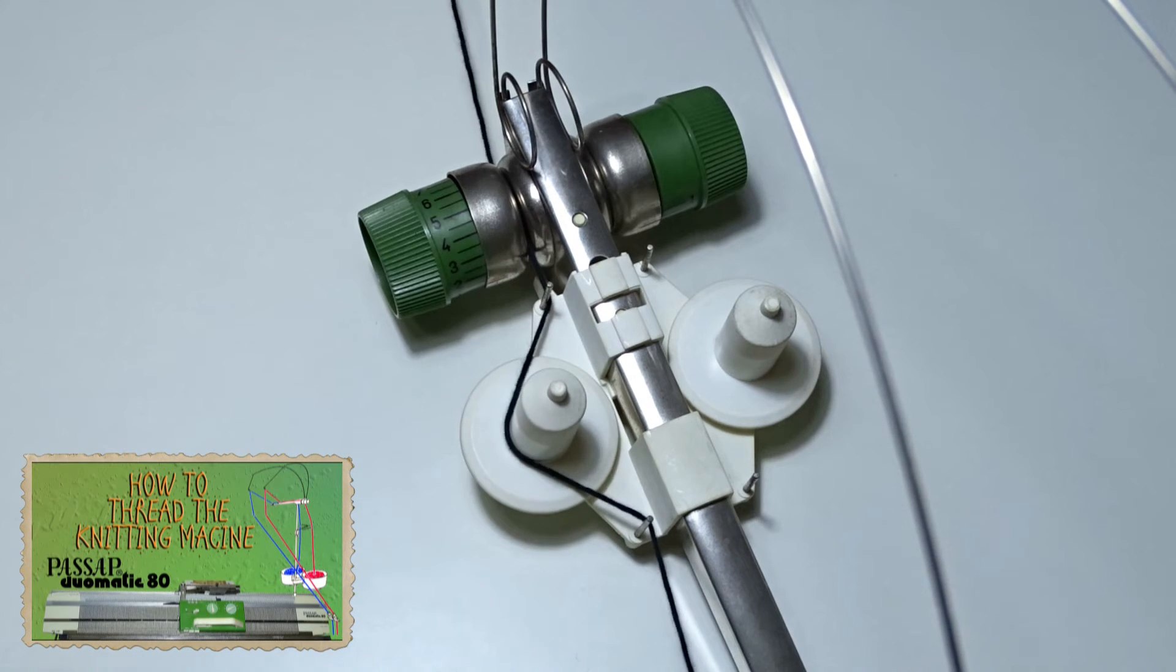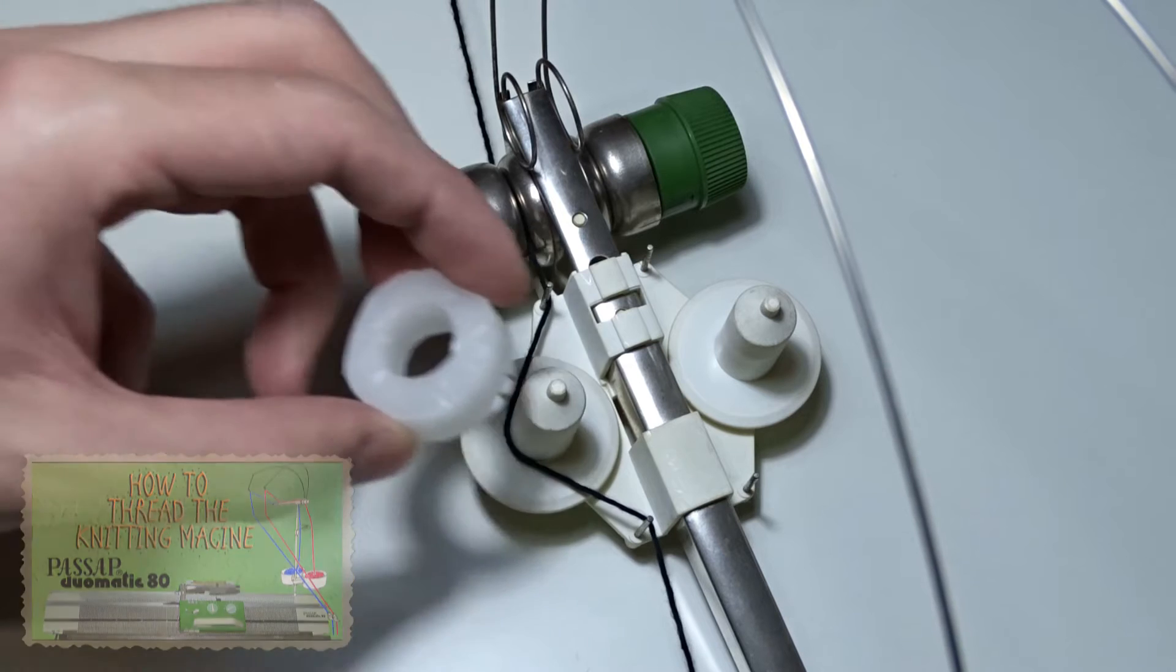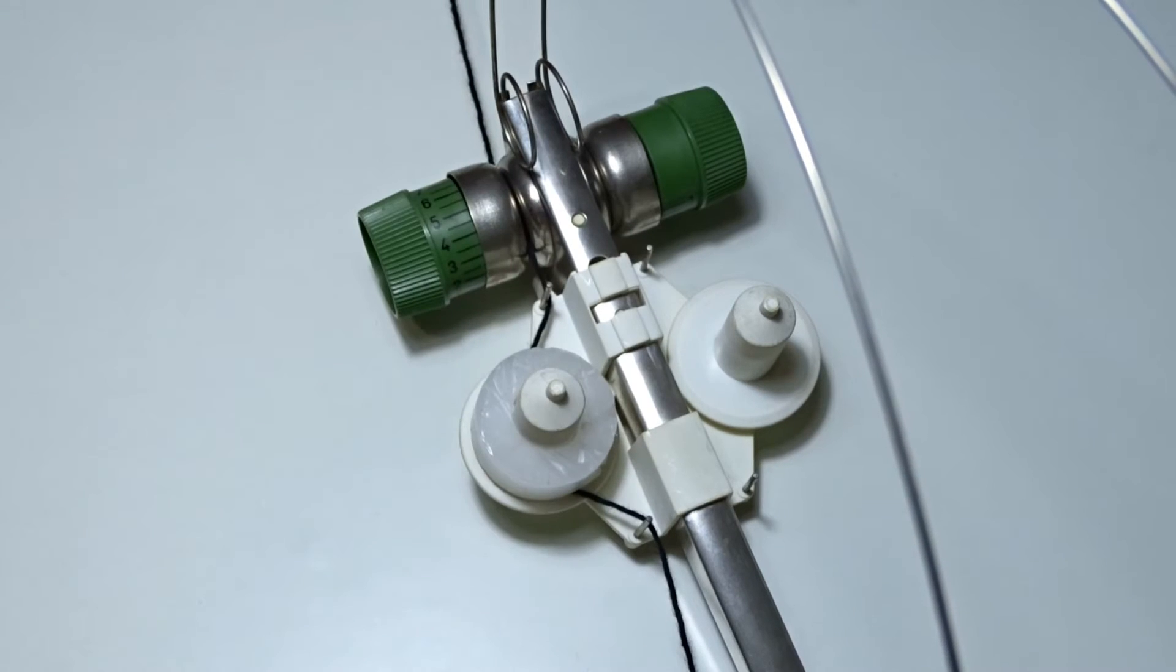Then continue threading the machine as usual. After the machine is threaded, put a paraffin ring on each holder and you can start knitting.